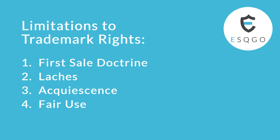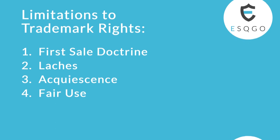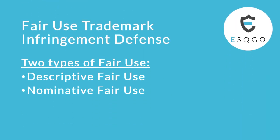While a trademark owner or registrant has broad powers, those powers aren't absolute — meaning there are some limitations. Some of those limitations include the first sale doctrine, latches, acquiescence, and fair use. In this video, we're going to focus on fair use; in other videos we'll cover the other limitations.